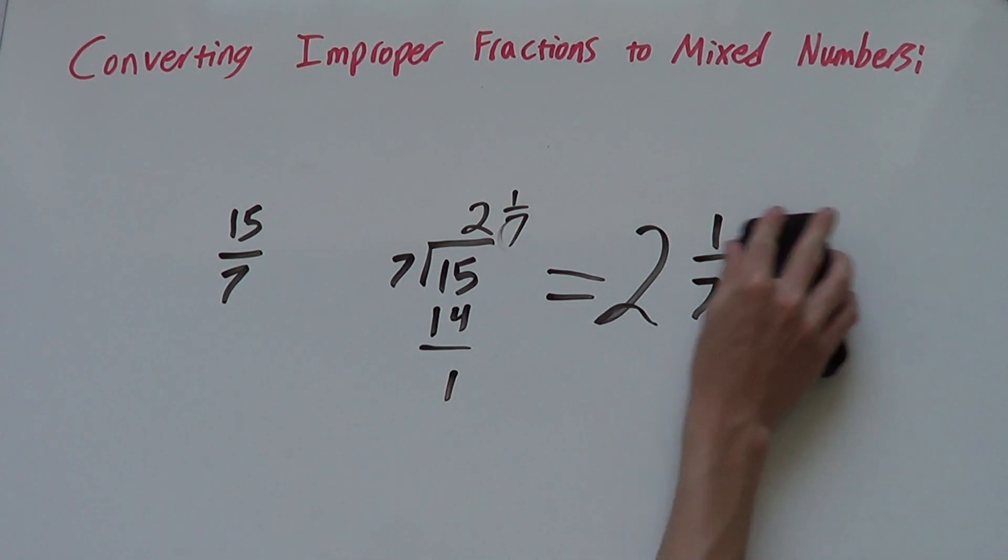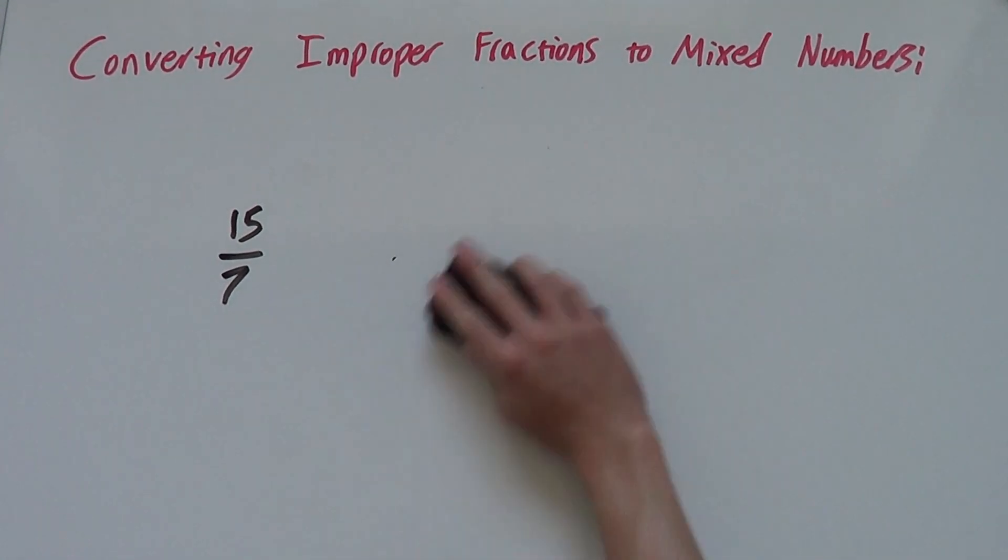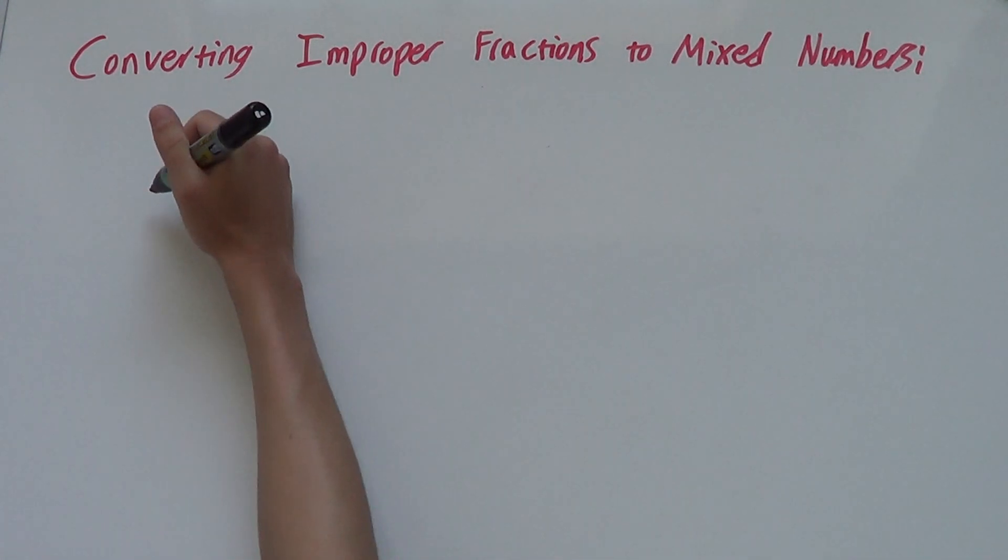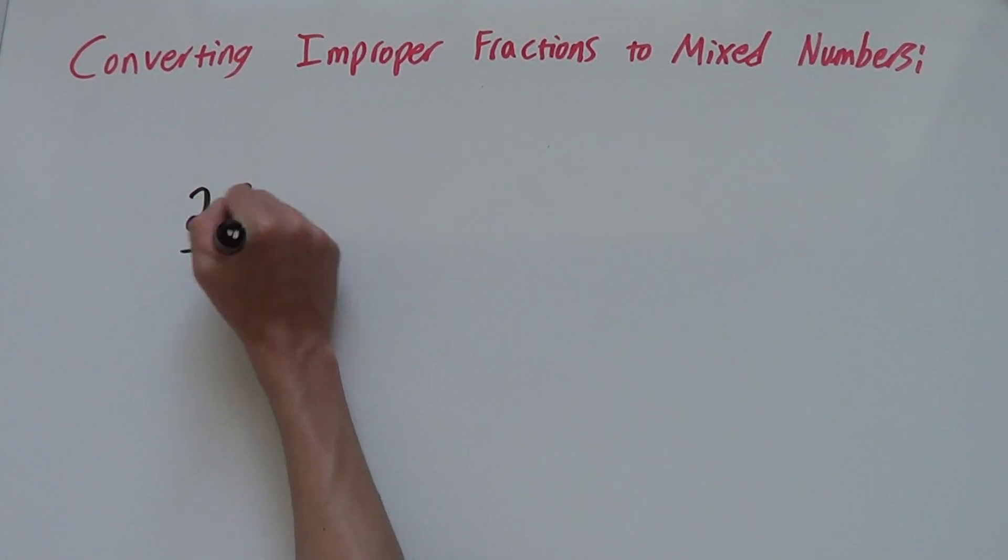Let's look at one final example. Just to make sure you know this, this time we will look at 29 over 3.